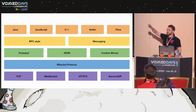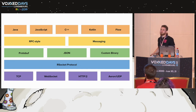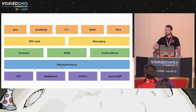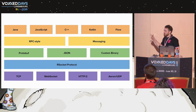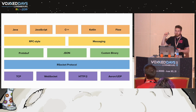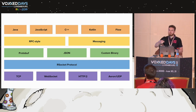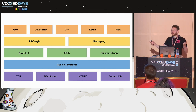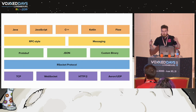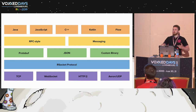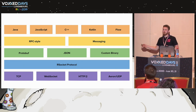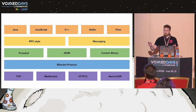Looking at the whole RSocket ecosystem, there is support in many languages: Java, JavaScript, C++, Go, and .NET. You can use whatever architecture you want - RPC or messaging - any message format, and convert everything to bytes. Most importantly, you can use it on top of any kind of transport.